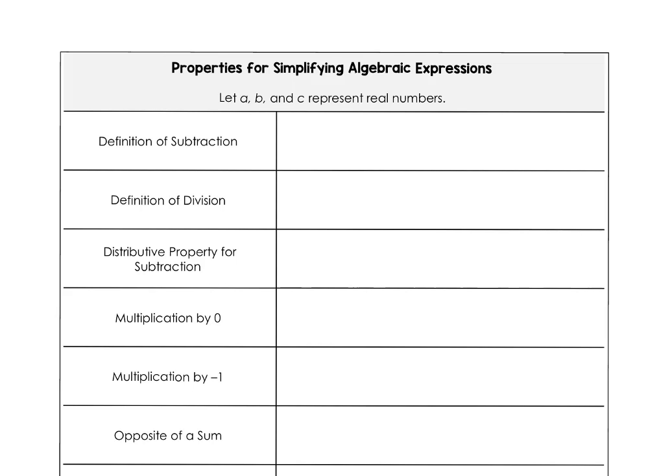And finally, we're just going to summarize all of the properties for simplifying algebraic expressions, and we're going to use the letters A, B, and C. The definition of subtraction, A minus B, can also be looked at as A plus the opposite of B. The definition of division, A divided by B, can be written horizontally, vertically, and it could also be written as a multiplication problem when I separate the denominator, as long as the B value is not 0.